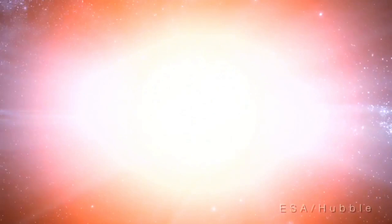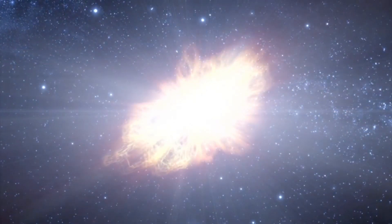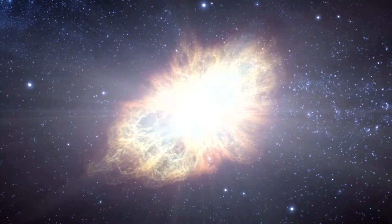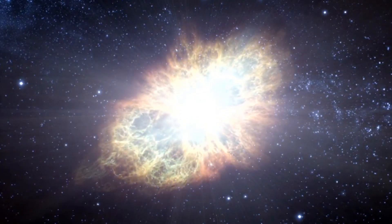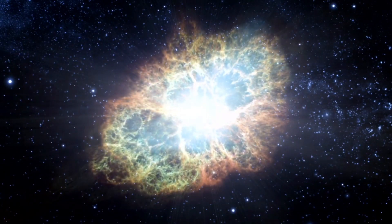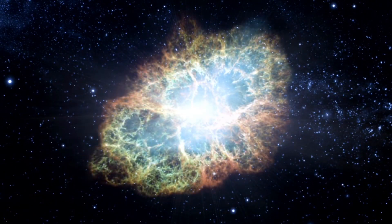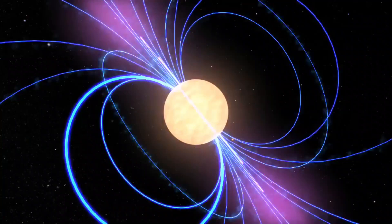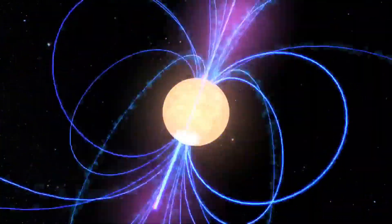The Crab Nebula, born from a supernova explosion witnessed by Chinese and other astronomers in 1054, is located 6,500 light-years from Earth. At its core lies a neutron star, an incredibly dense object formed by the supernova. This neutron star spins about 30 times per second, sending beams of radiation across Earth like a cosmic lighthouse.